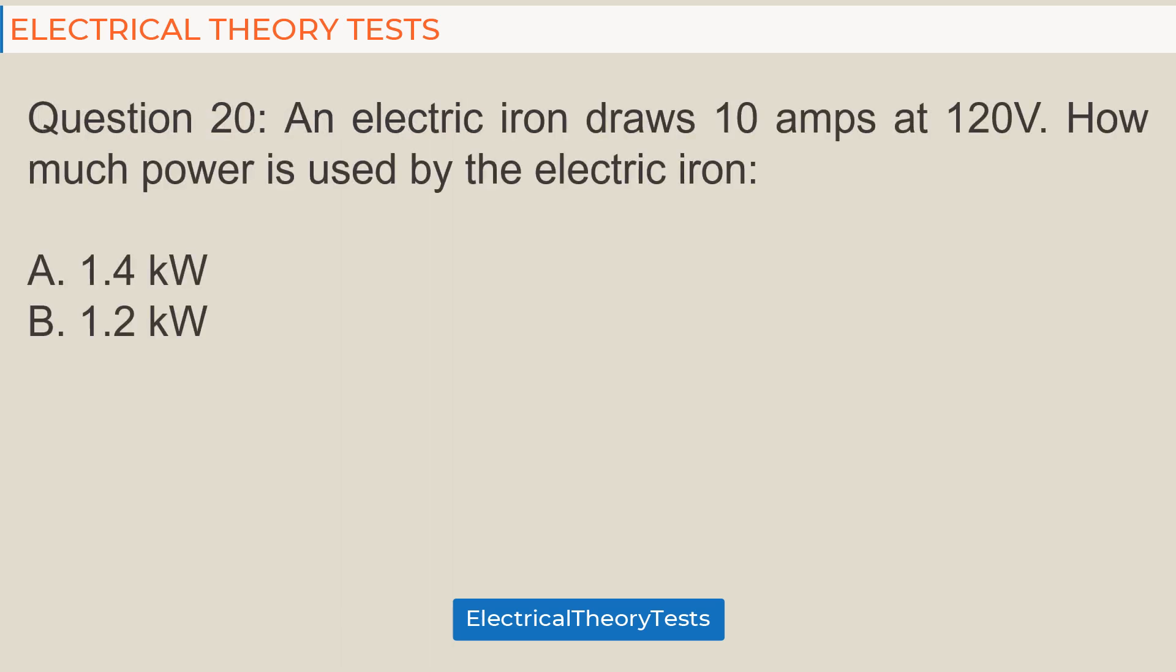Question 20: An electric iron draws 10 amps at 120 volts. How much power is used by the electric iron? A. 1.4 kilowatts, B. 1.2 kilowatts.